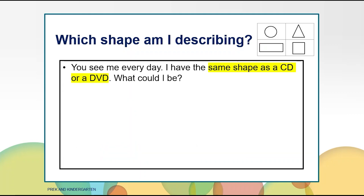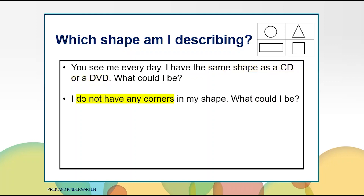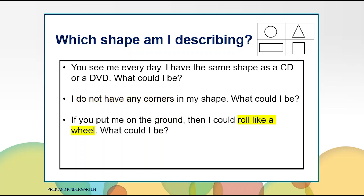Let's try to guess another shape. Here is the first clue: You see me every day. I have the same shape as a CD or a DVD. What could I be? Here is the second clue: I do not have any corners in my shape. What could I be? Here is the next clue. If you put me on the ground, then I could roll like a wheel. What could I be? Now that you have all of the clues, decide if you want to keep the counter or move it.